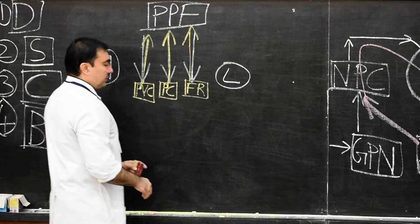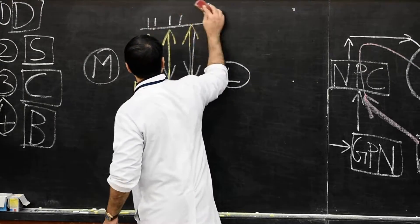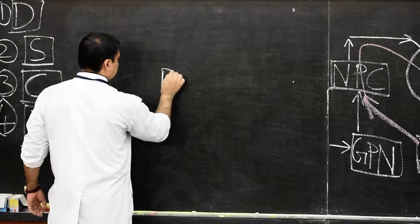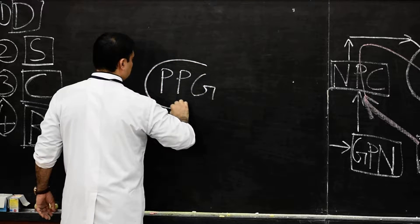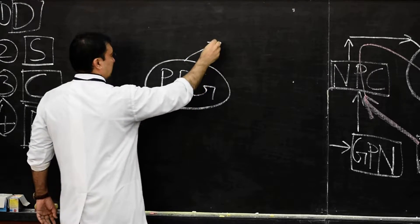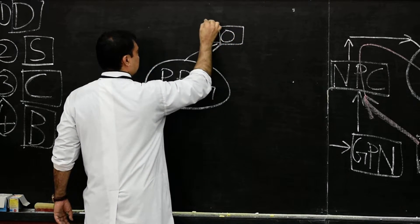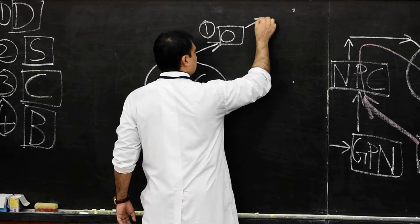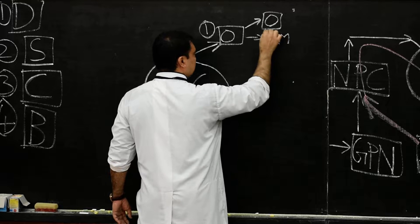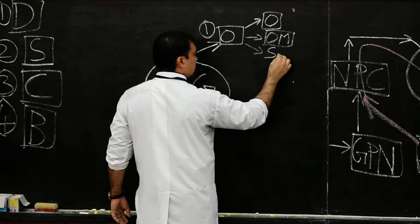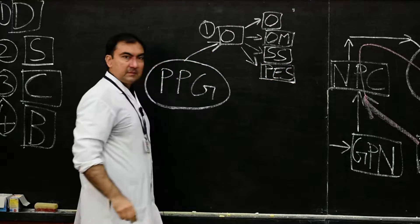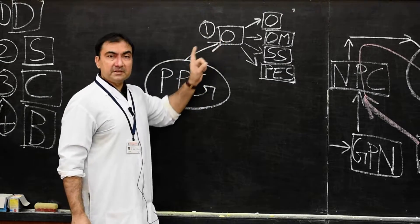Now we start with the branches of the pterygopalatine ganglion. The first branches will be the orbital branches. These orbital branches will supply the periosteum of the orbit, the orbital muscle, the sphenoidal sinus, and the posterior ethmoidal sinus. These are the structures supplied by the orbital branches of the pterygopalatine ganglion.